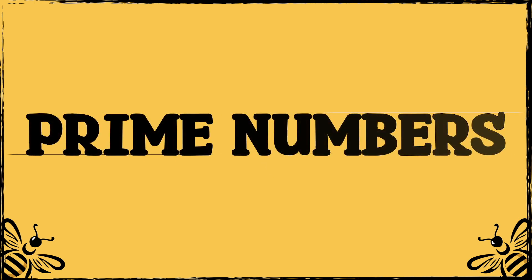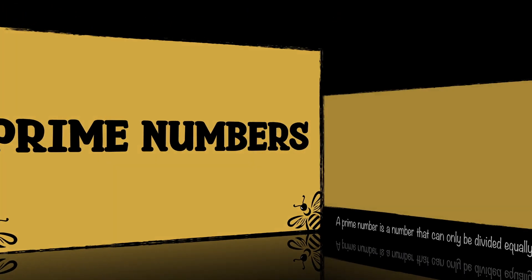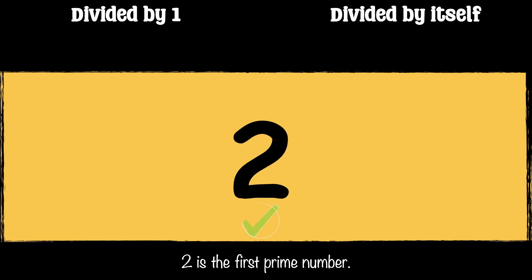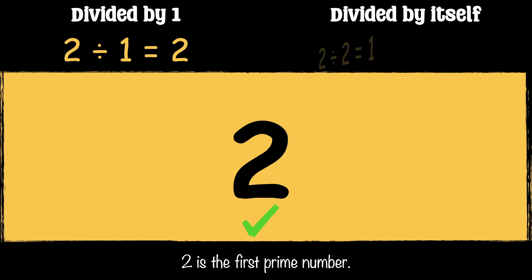In this video we're going to be looking at prime numbers. A prime number is a number that can only be divided equally by 1 and itself. Let's have a look at the prime numbers up to 10. The first prime number is 2 — it can only be divided by 1 and by itself.